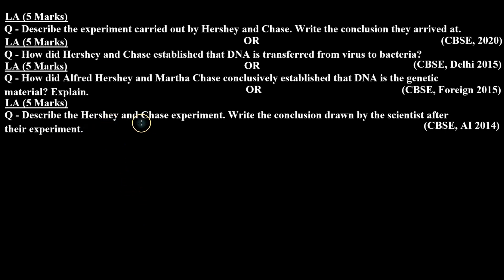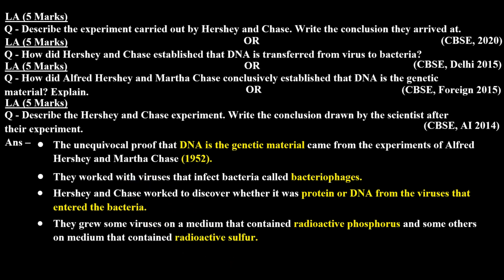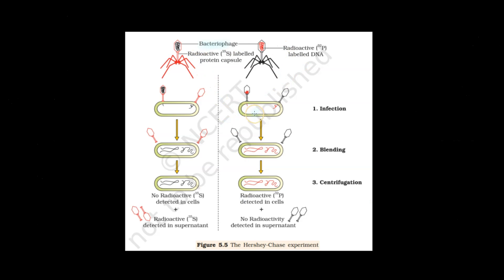So let's check the answer. This is how Hershey and Chase worked with bacteriophages — viruses which infect bacteria. They grew the viruses in radioactive sulfur-containing medium and radioactive phosphorus-containing medium. The bacteria grown in the radioactive sulfur medium: the protein was labeled with radioactive sulfur. The bacteria grown in the radioactive phosphorus medium: the DNA was labeled with radioactive phosphorus, making the virus radioactive in each case.